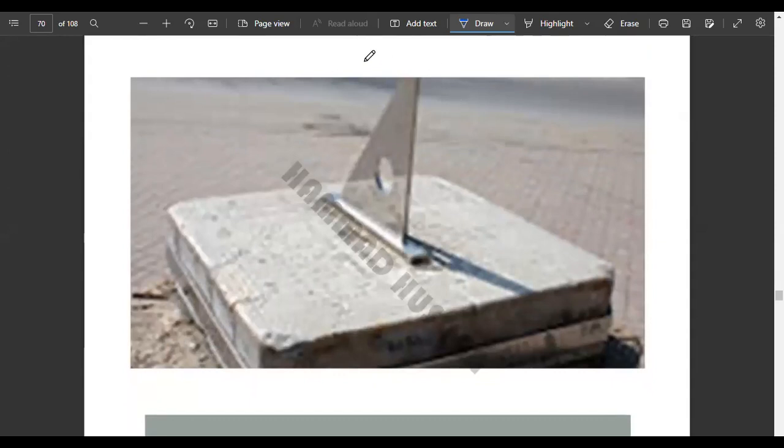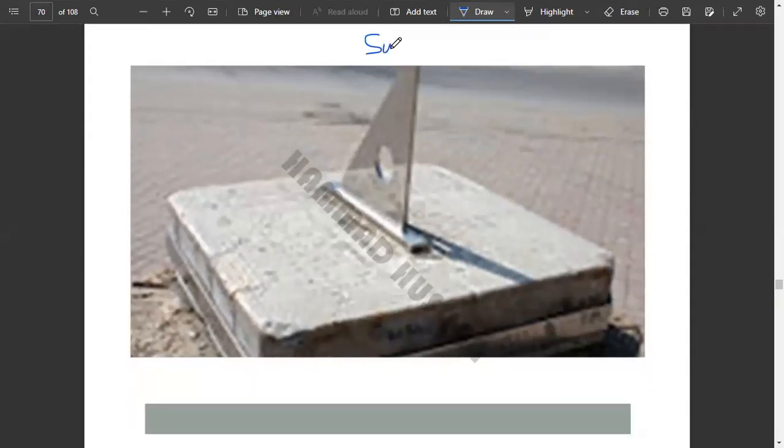In the past, there used to be a thing that we call a sundial. Here is a picture of a sundial which people used to measure time by seeing that as the sun moves, it used to give you the time.